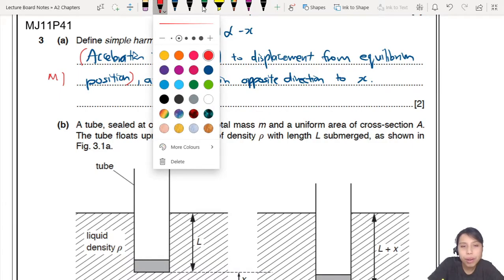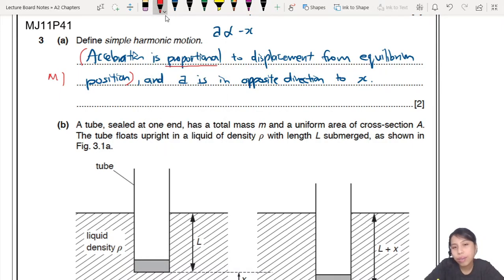Then the second mark will come from the idea of acceleration in opposite direction to displacement. By the way, I write here A, but you write the whole thing. The second mark will come from the detail here on where is acceleration pointing. Is it always to the middle, is it in opposite direction to x, so you must mention that also. And this is the M1 mark. M means you have to talk about the M1 mark, only you can get your A1 mark.